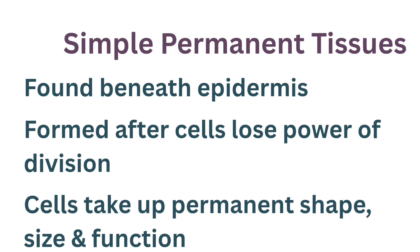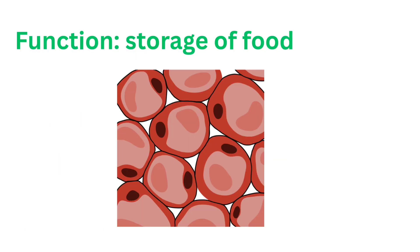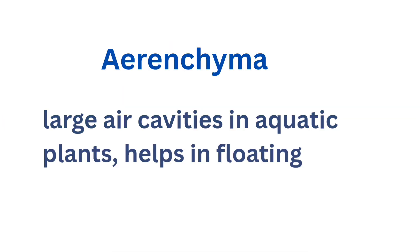The most common simple permanent tissue is parenchyma. These are living cells with thin walls, usually loosely packed, leaving large intercellular spaces, and their main function is to store food. Parenchyma can also be modified: when it contains chlorophyll, it performs photosynthesis and is called chlorenchyma. In aquatic plants, parenchyma has large air cavities that help the plant float, and such parenchyma is called aerenchyma.